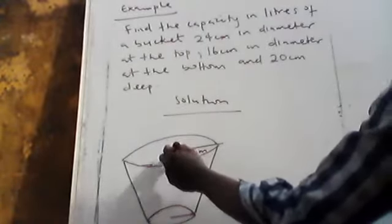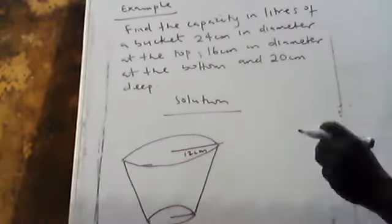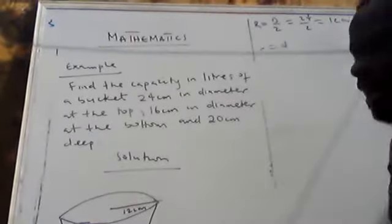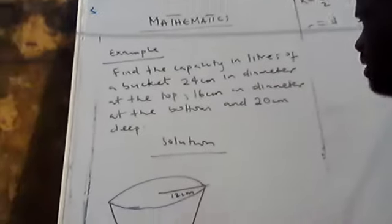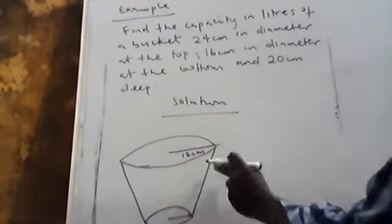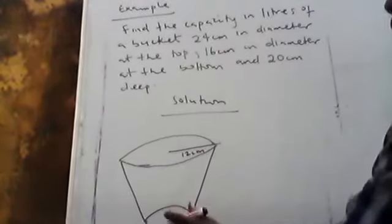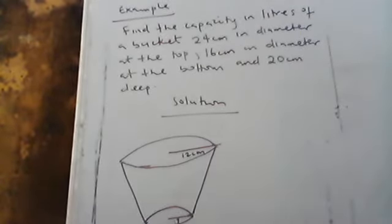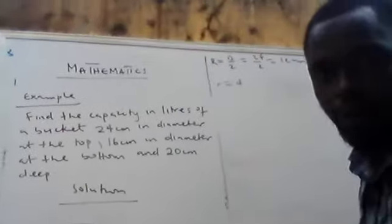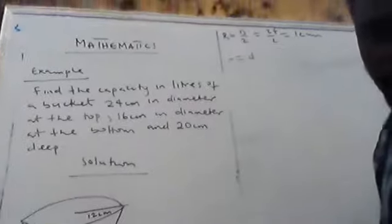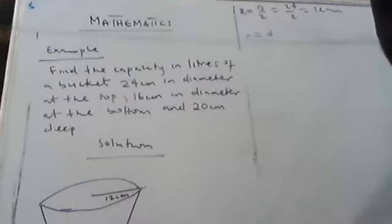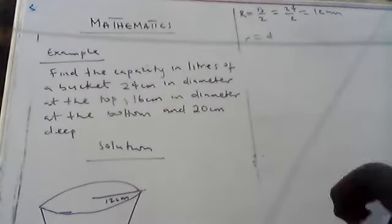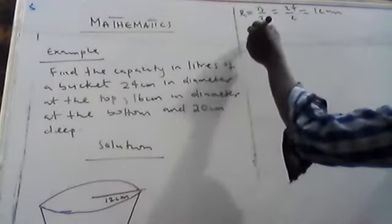To find the radius, I divide the diameter by 2. The diameter at the top is 24, so the radius R = 12 cm. The diameter at the bottom is 6, so I divide by 2 to get the radius r of the smaller cone.